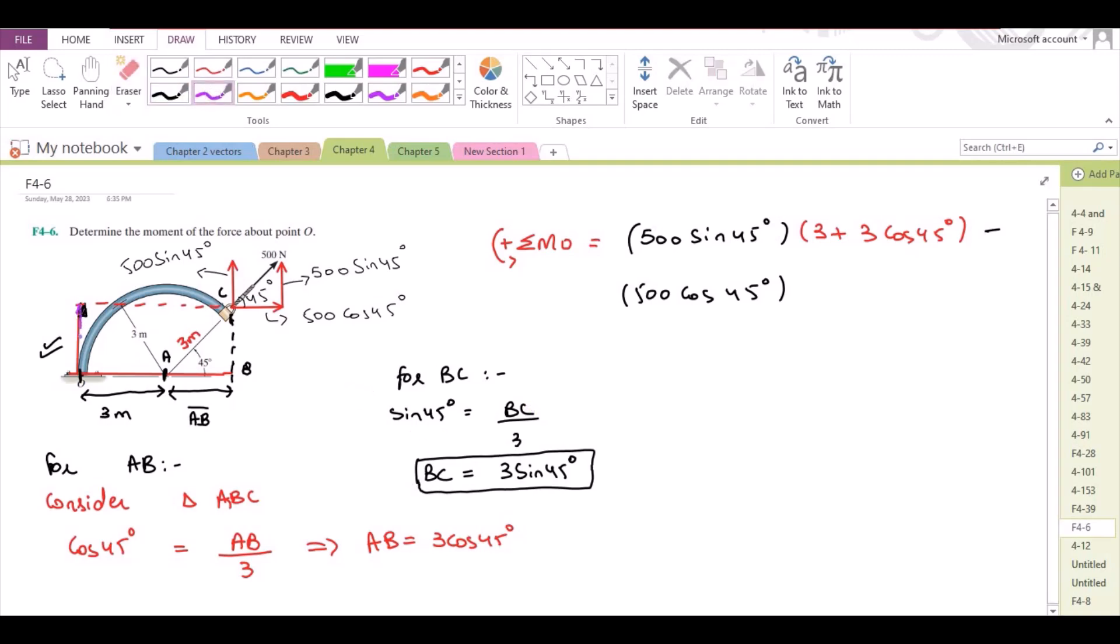This perpendicular distance from the given figure is same as the length BC. We have 3sin45.